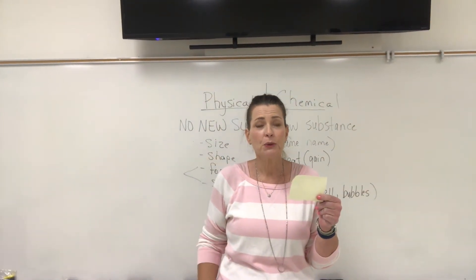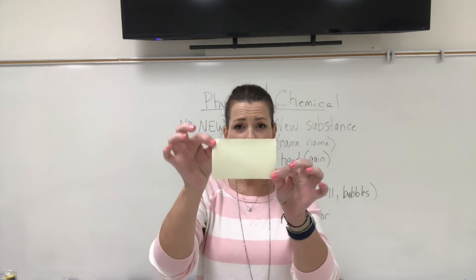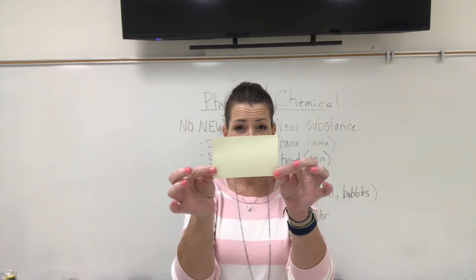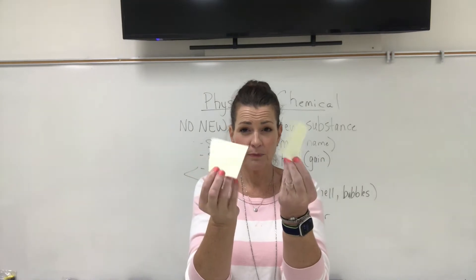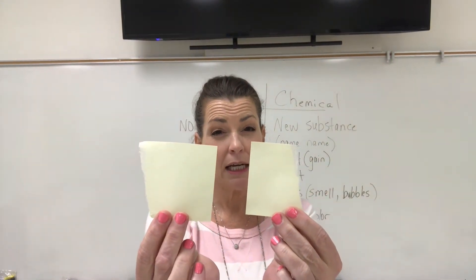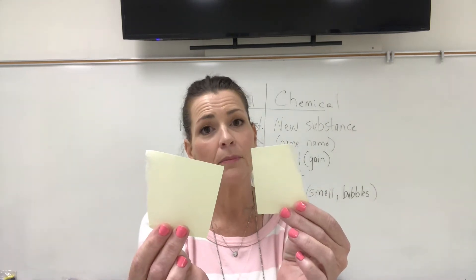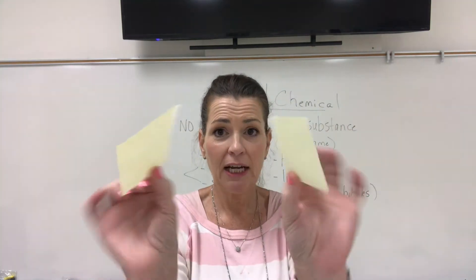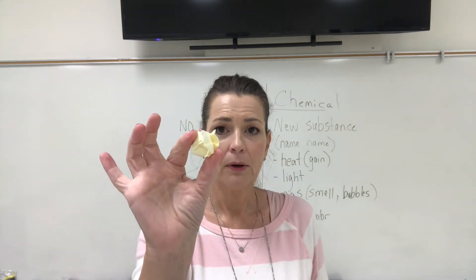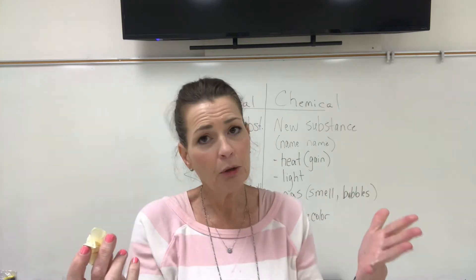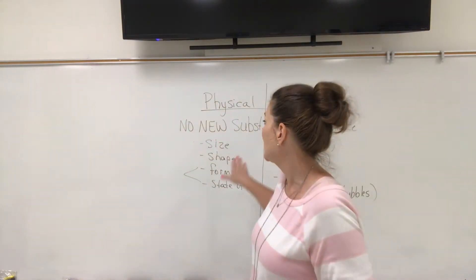Here's a simple way to begin learning about physical changes. I have a piece of paper — a little post-it note. Number one, it's paper, and number two, you can see it's in the shape of a rectangle. If I tear this paper, how did the paper change? First, we need to ask ourselves: what is this substance? It's still paper, so that's one indicator — a new substance was not formed. Number two, it changed in size and in shape. It's still paper. I could wet it — it's still paper. It does not form a new substance, so it is a physical change.